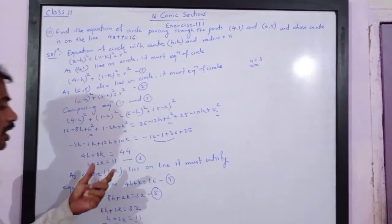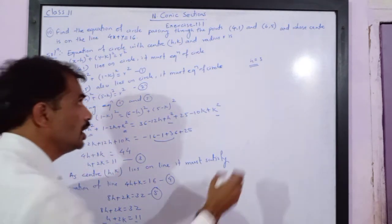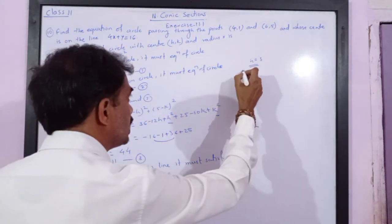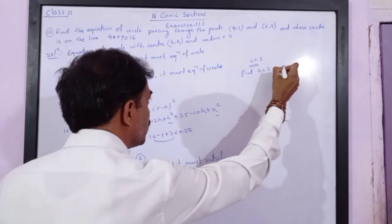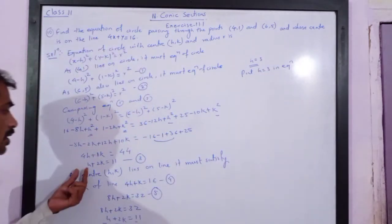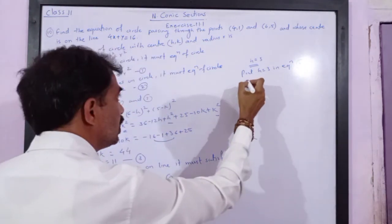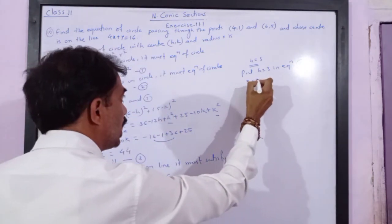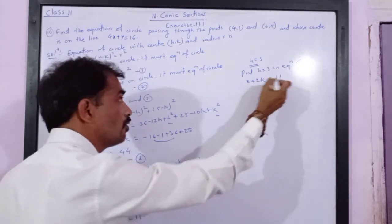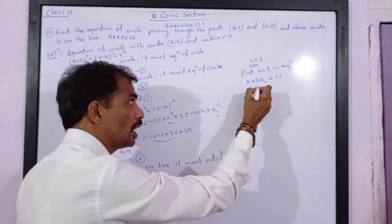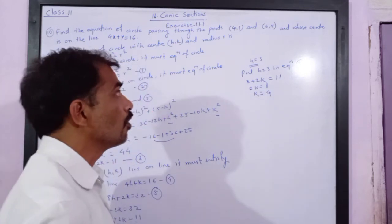Now substituting h = 3 into equation number 3: 3 + 2k = 11, so 2k = 8, which gives k = 4. Thus we have the values h = 3 and k = 4.